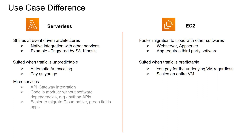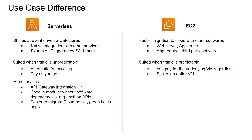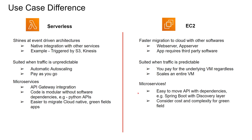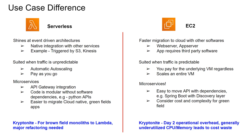Serverless is good for implementing microservices because Lambda has API Gateway integration, the code is modular without software dependencies — for example, Python APIs — and it is easier to migrate cloud-native greenfield apps to serverless. EC2 is good for microservices as well because it is easy to move APIs with dependencies, such as Spring Boot. However, you have to consider cost and complexity for greenfield applications. The kryptonite for Lambda is that major refactoring might be needed for brownfield monoliths. For EC2, the kryptonite is more day-two operational overhead than serverless, and generally underutilized CPU and memory leading to cost waste.